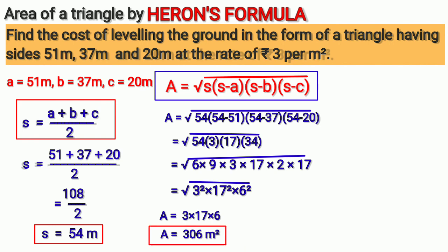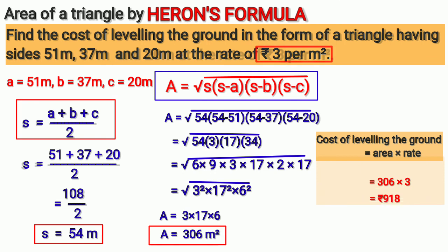But our sum is not over yet because we have to find cost of leveling the ground. Cost of leveling will be area times rate. Area of ground is 306 and rate of leveling is given as 3. So finally, cost of leveling will be 306 × 3 which comes to rupees 918.